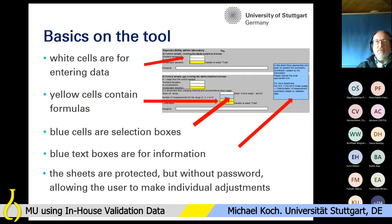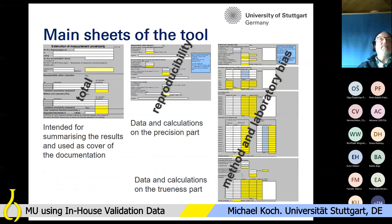The sheets are protected but not password protected, so all users can make individual adjustments if they need them for their special purpose. However, this means there is no guarantee that afterwards it will work correctly. There are three main sheets in the tool. The first is a sheet called 'Total' — that's the cover of the documentation — where you can describe the measurement and see the result of the precision part and the method and laboratory bias part.